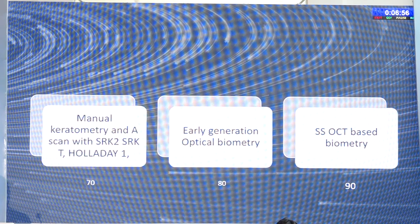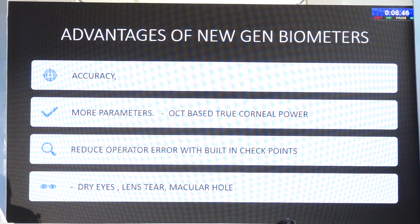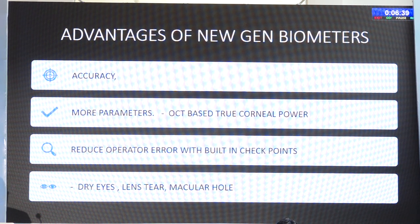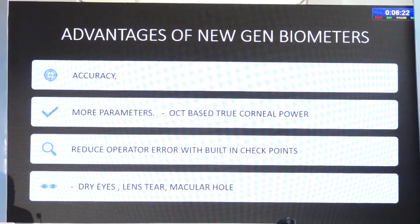Axial length is no longer the issue, but the cornea is the issue and this has been extensively covered in the last few years. We have to optimize the cornea before taking measurements. The advantage of newer generation biometers is that they are more accurate for the cornea, we get a whole set of new parameters, and we can get a true corneal power by OCT-based machines which measure the front and back of the cornea. Mistakes the operator makes are reduced because machines have checkpoints.